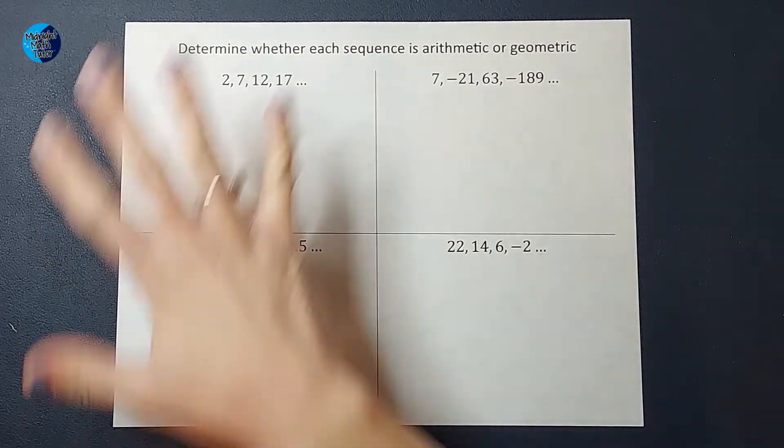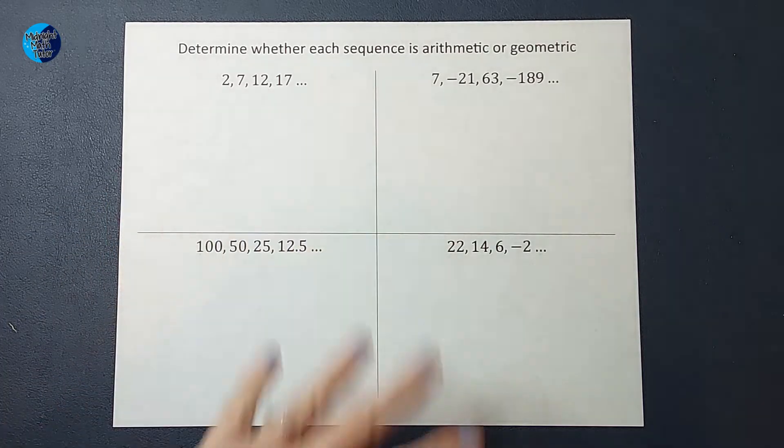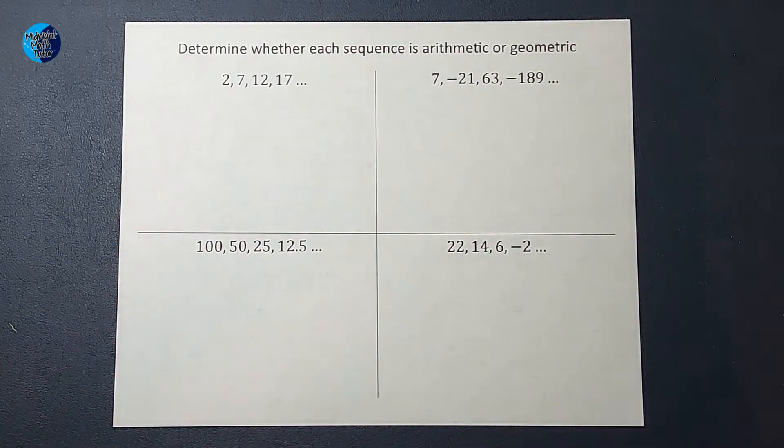So first of all, the reason these are called sequences and not just a list of numbers is they are related somehow. There's something happening, some sort of pattern in which they are related and that's why they're sequences.